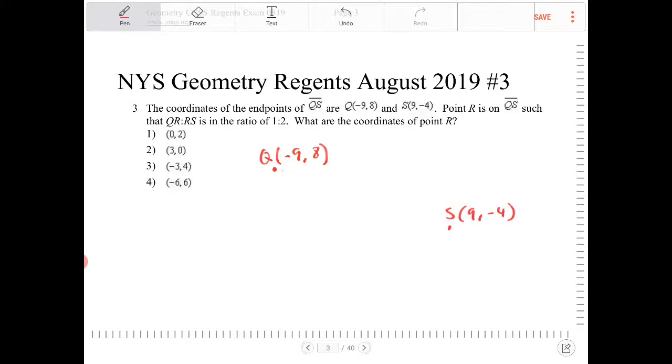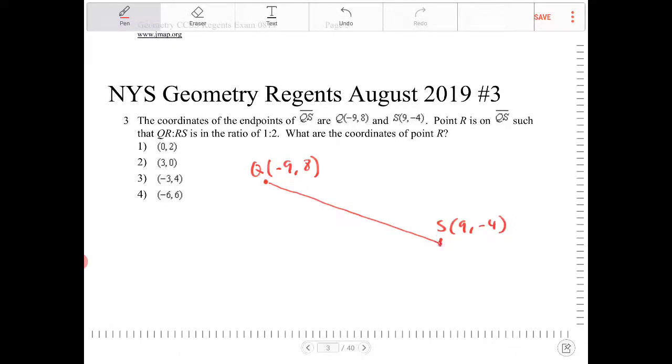So this problem is actually a similar triangle problem in disguise. We're looking for a point R that will partition this line segment into ratios of 1 to 2. So it's going to be closer towards Q than it is towards point S because we're talking about a ratio of 1 to 2.